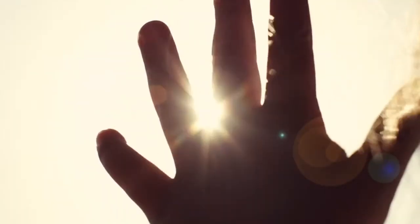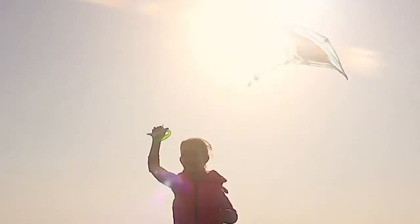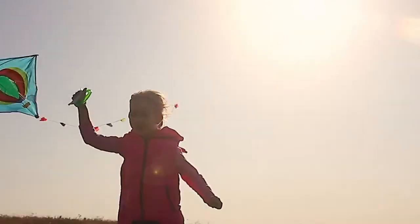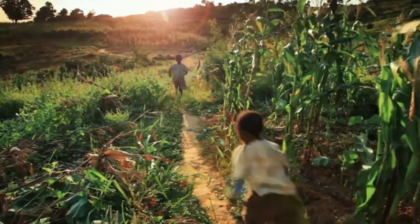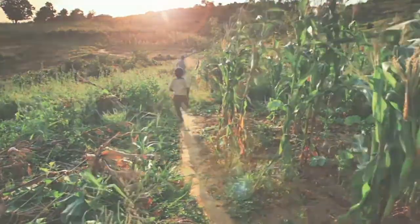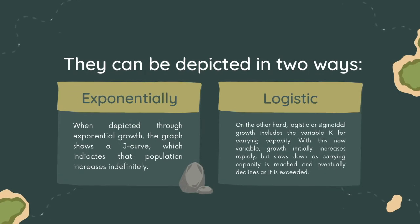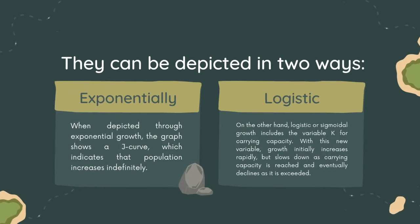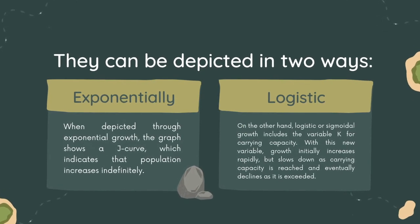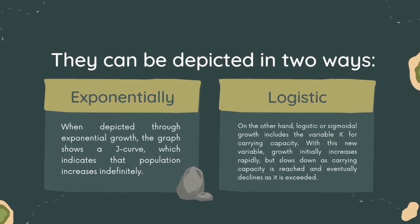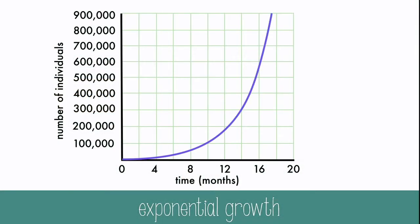When a population increases, there are a number of ways this can be depicted. To visualize the state of a population, its growth may be depicted through exponential or logistic growth. When depicted through exponential growth, the graph shows a J-curve, which indicates that the population increases indefinitely.